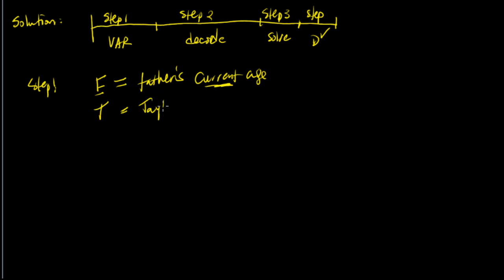So here we're going to say it's Taylor's current age. Now you notice I take an extraordinary effort to write out the variables. I don't just put F and E or F and T in this case. The reason is the clearer you can get on the variable in step one here, the better chance you'll have in decoding the messages from the words.